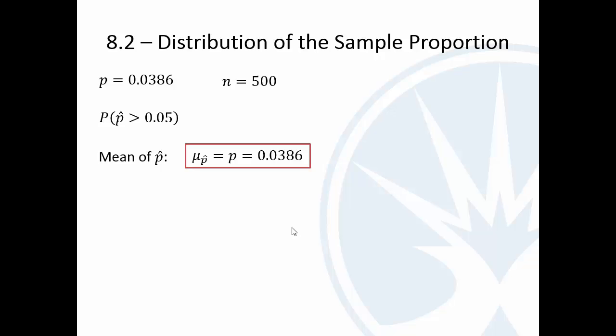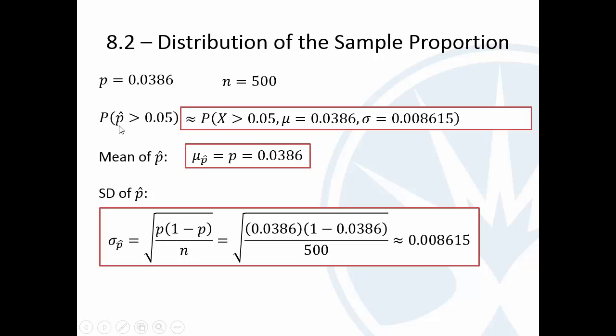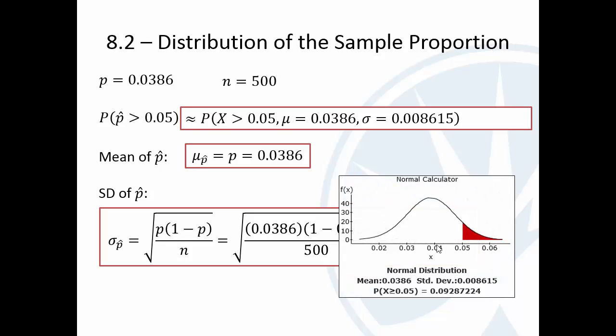So the mean should be the same as the population mean. The standard deviation is that square root of P times 1 minus P all over N. And that is 0.008615. Again, notice four digits. And so now the probability of a proportion being at least 5%, that more than 5% of them get breast cancer, it's approximately equal to the normal variable with this mean and this standard deviation. Here's a screenshot from StatCrunch. So about a 9% chance of that happening.